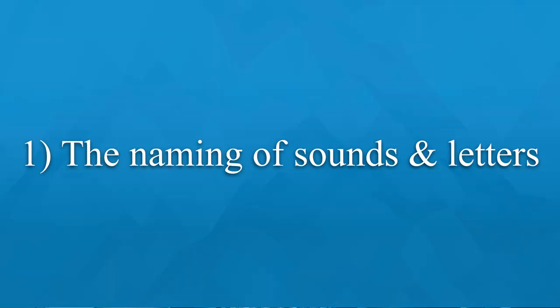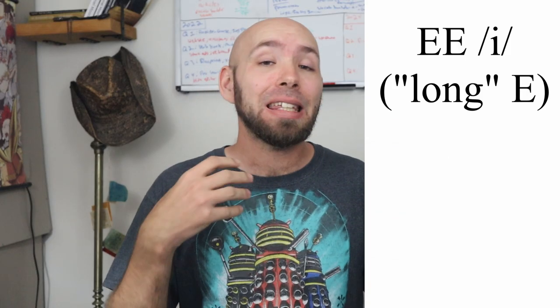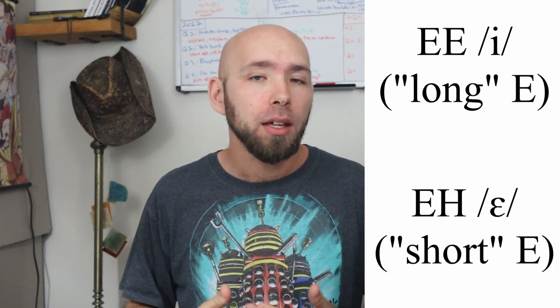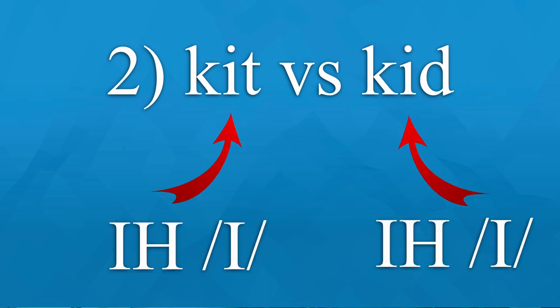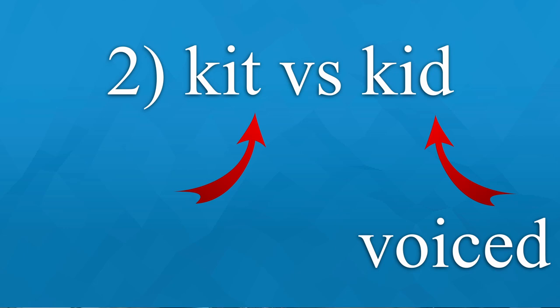There are two ways that this concept of vowel length is applied to things in English. One is with the naming of letters — for example, the long E and the short E. The second way is in the difference between words like 'kit' versus 'kid,' where the consonant after the vowel, whether it's voiced or voiceless, will actually change the length of the vowel. But we're going to come back to that. First, let's take a more in-depth look at the first type.